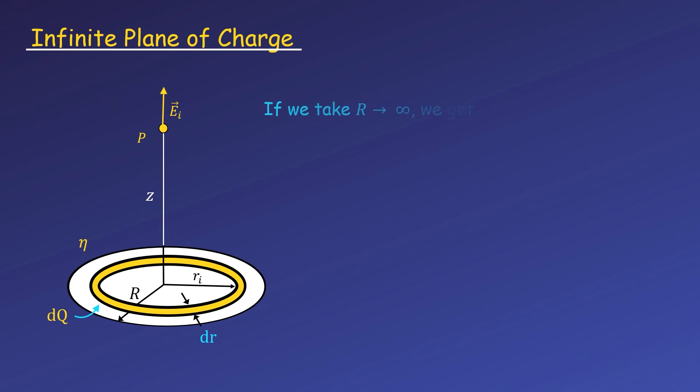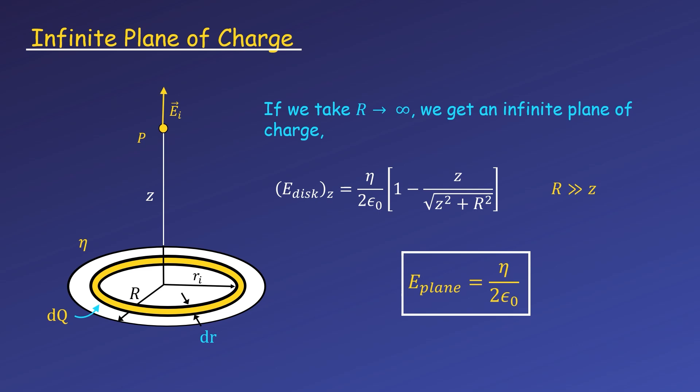Another limiting case we can look at is the infinite plane which we get by simply taking our disk and increasing the radius. In the limit where the radius approaches infinity, capital R will be much larger than z. Since the denominator of our second term in brackets is getting very large, that term goes to zero, leaving us with just the surface charge density over 2ε₀.